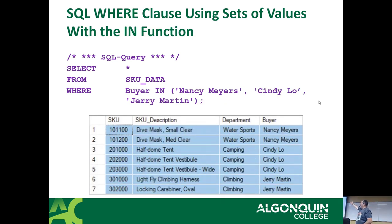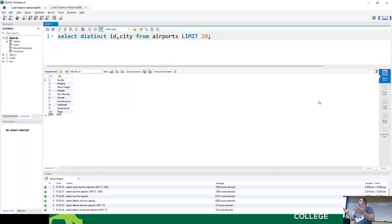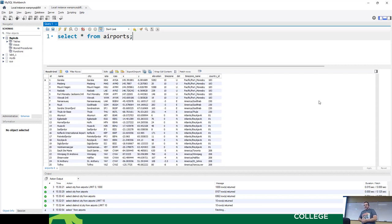SELECT * FROM SKU_data WHERE buyer NOT IN (list). If you can read it as an English sentence, there's a good chance your SQL statement is going to work — barring syntax errors like missing quote marks or parentheses. In and NOT IN is the perfect time to talk about why it's so English-like. You can also use multiple predicates: buyer = 'Nancy Myers' OR buyer = 'Cindy Lou' OR buyer = 'Jerry Martin'. Or use the nice list syntax: WHERE buyer IN (list).